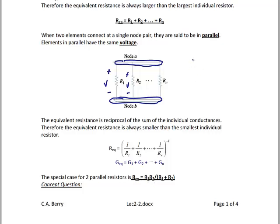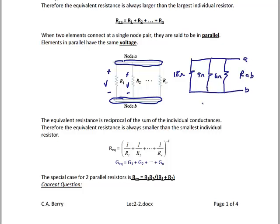Let's look at an example. What if I have an 18 ohm, a 9 ohm, and a 6 ohm resistor in parallel? The resistance RAB would be 1 over (1/18 + 1/9 + 1/6), which equals 4 ohms.